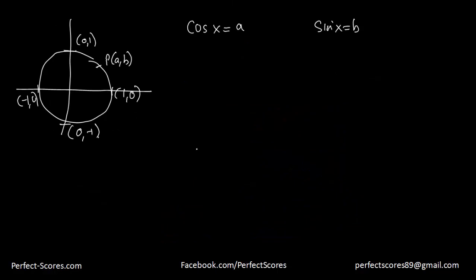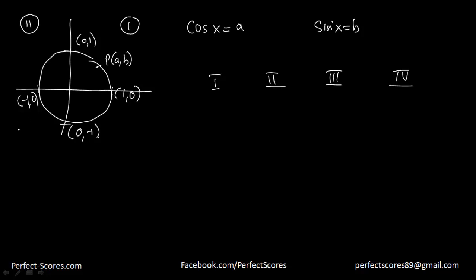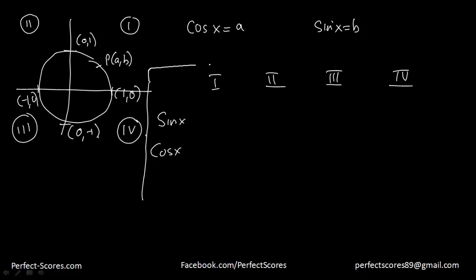I need to find out what the sign of sine x and cosine x will be in the first, second, third, and fourth quadrants. This region is the first quadrant, this is the second, this is the third, and this is the fourth. I'll draw a table for the signs of sine x and cosine x.